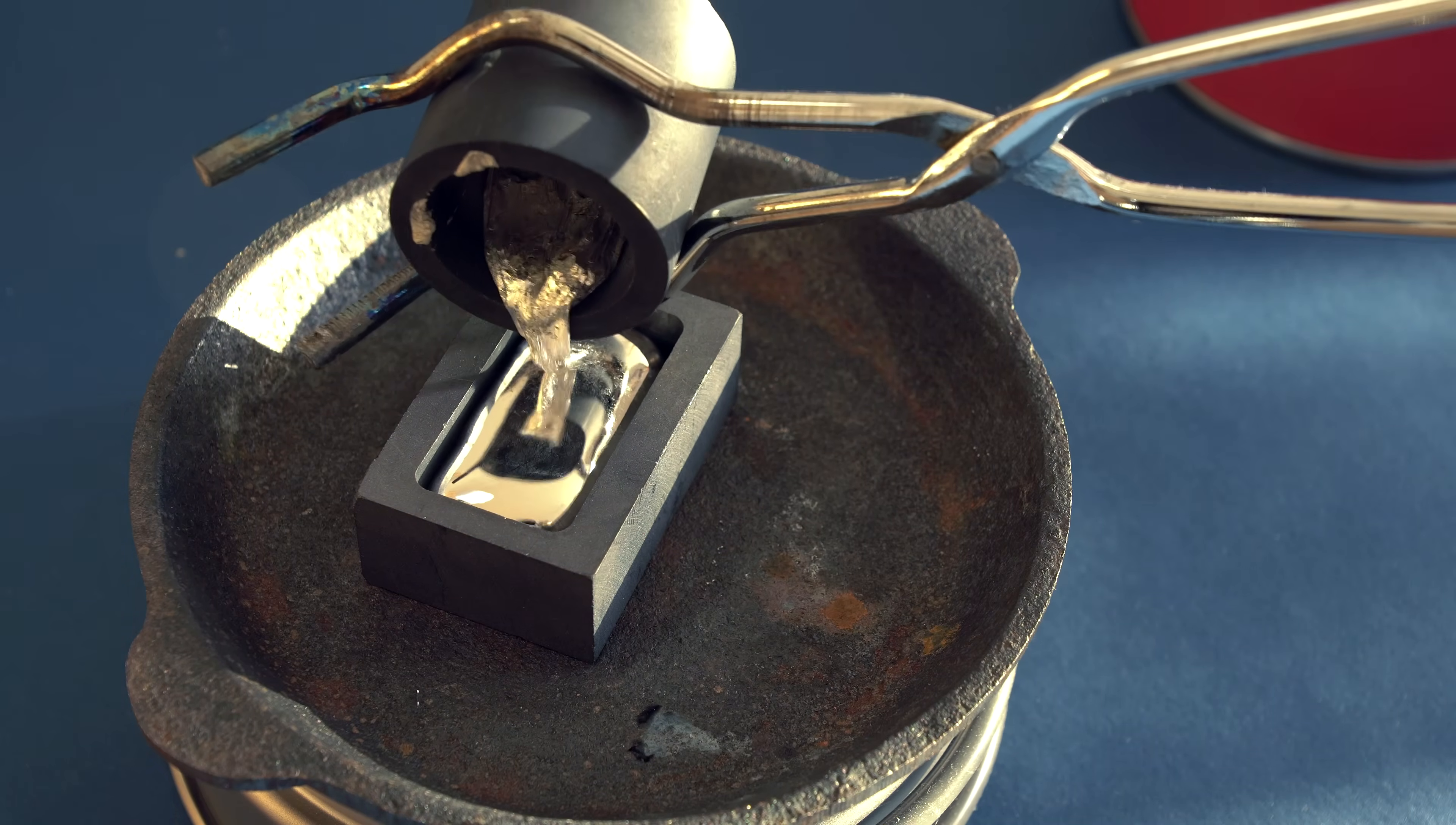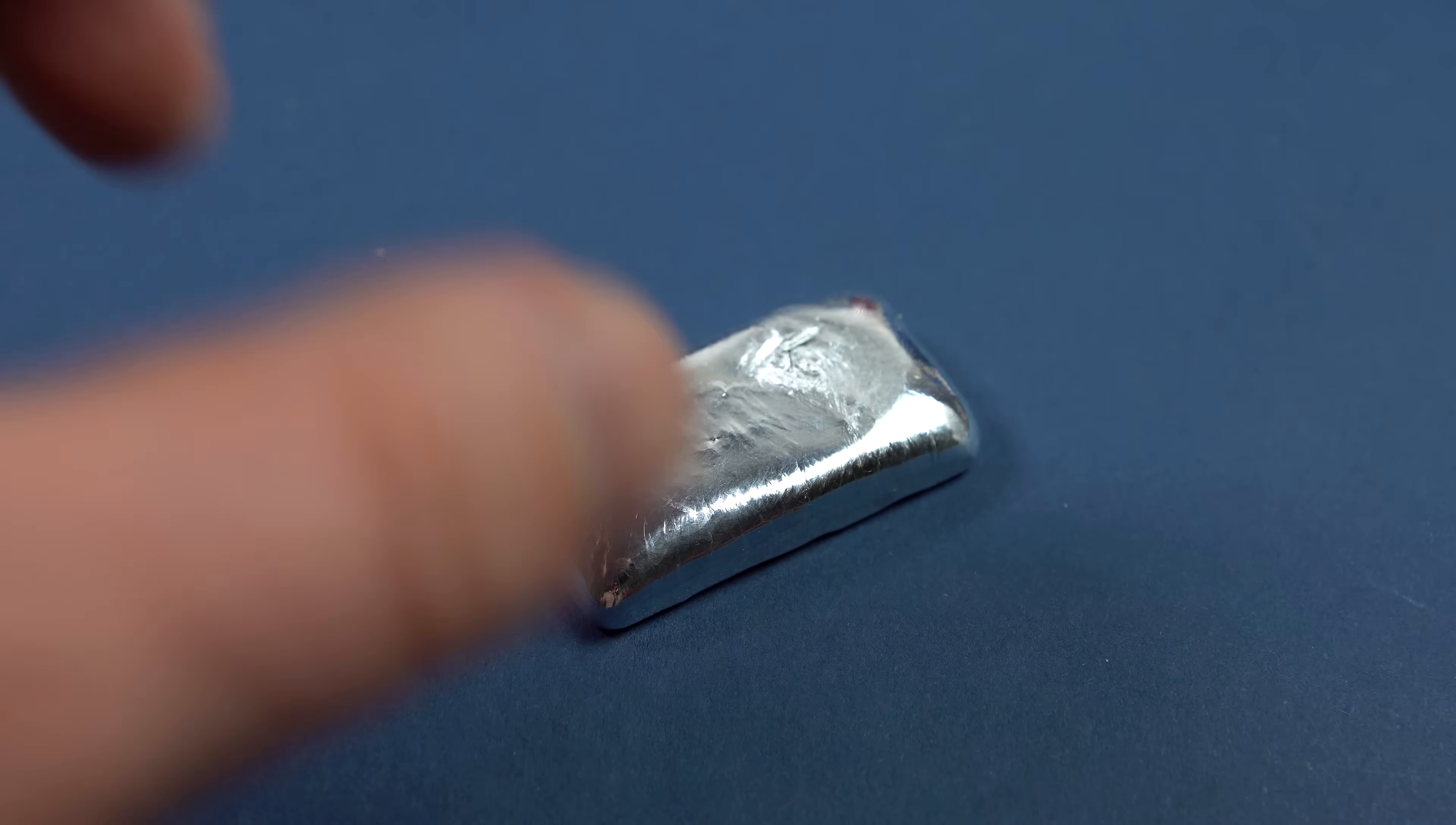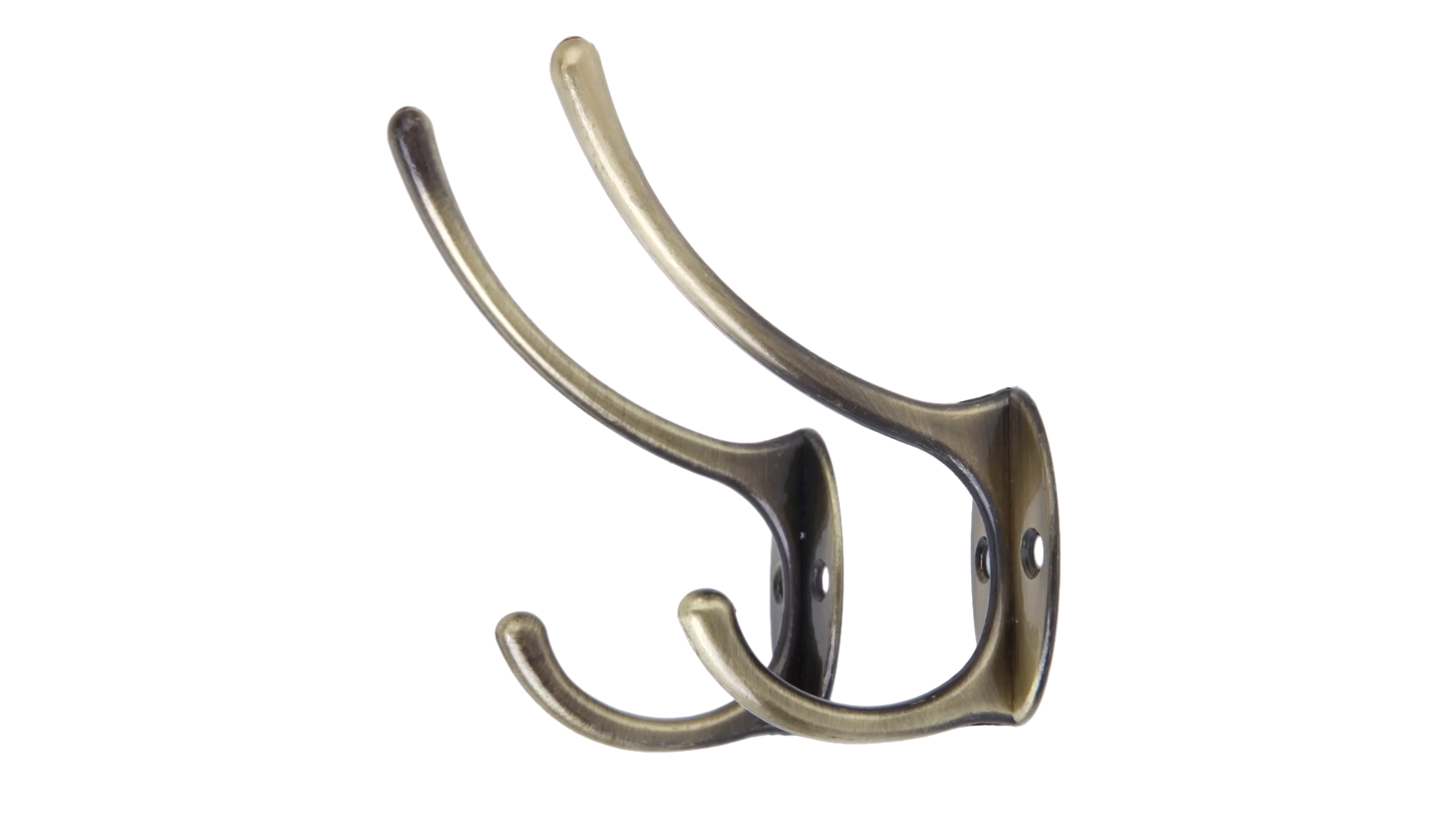Once hardened, zinc is a solid and dense metal. For instance, thanks to such properties, zinc is used to make lighter cases, hangers, door handles, and so on.